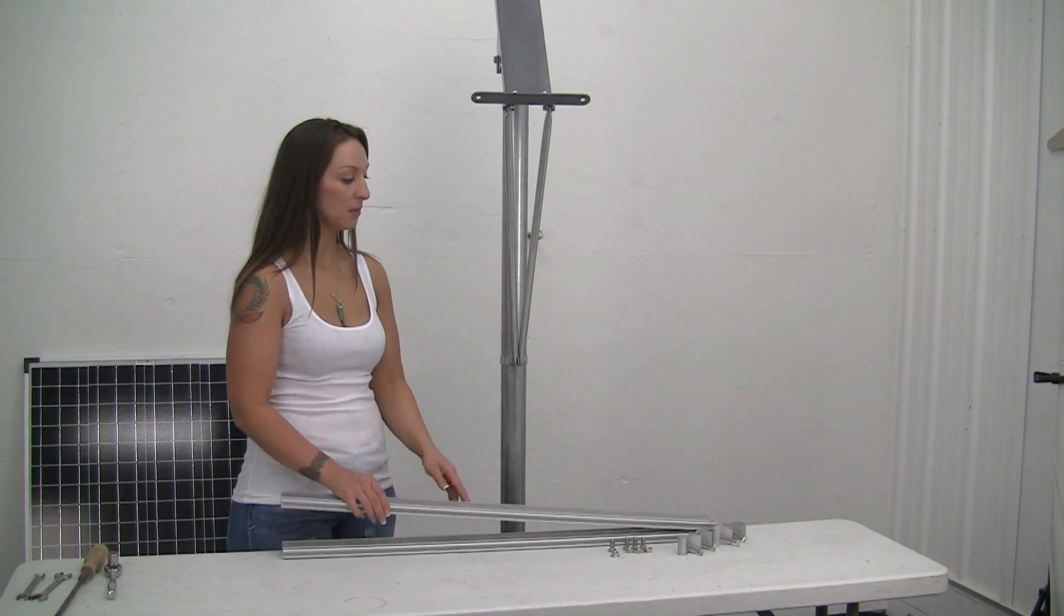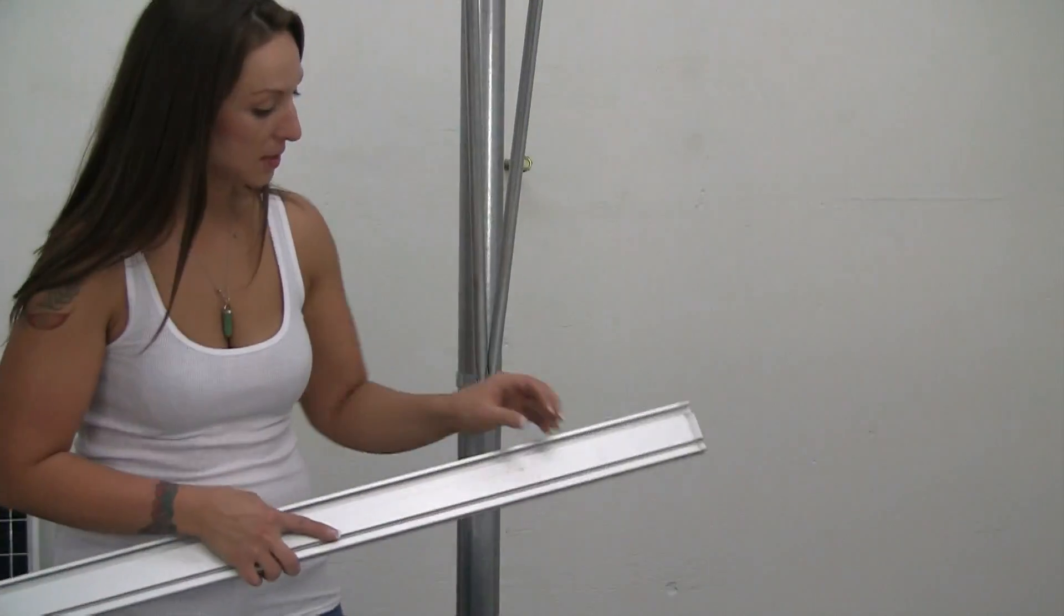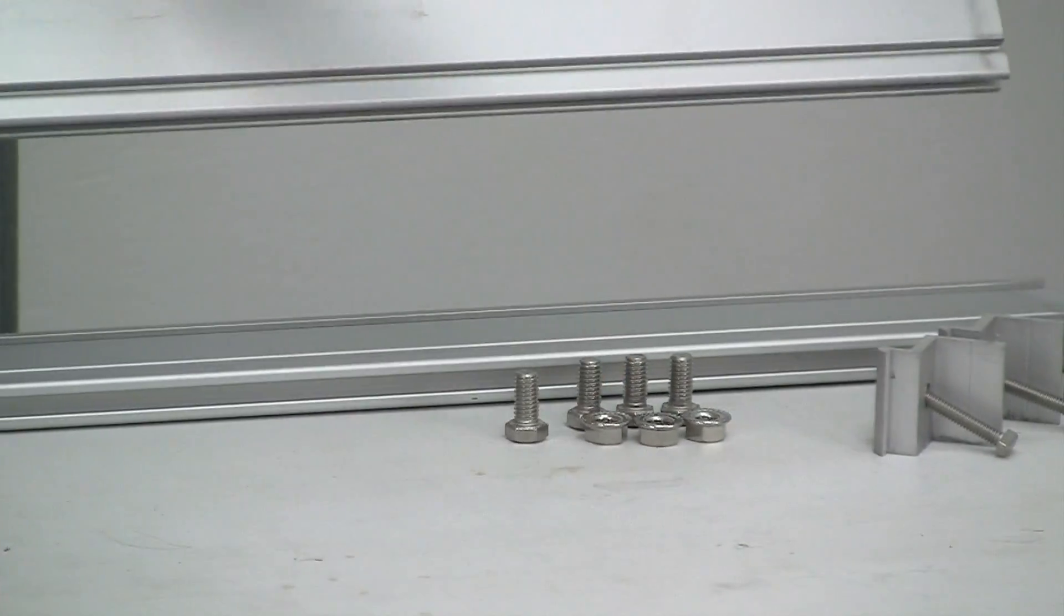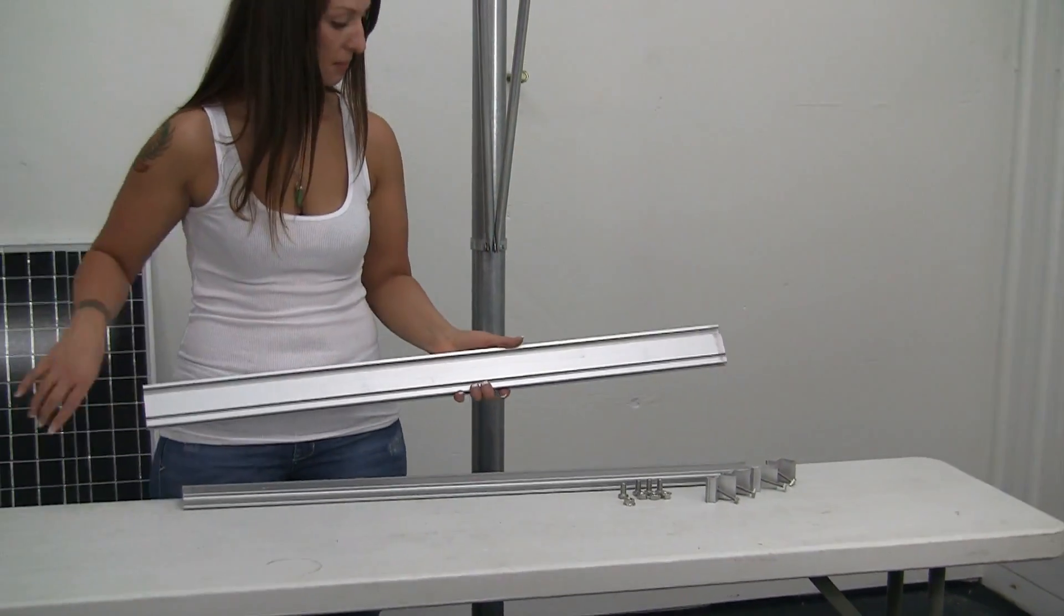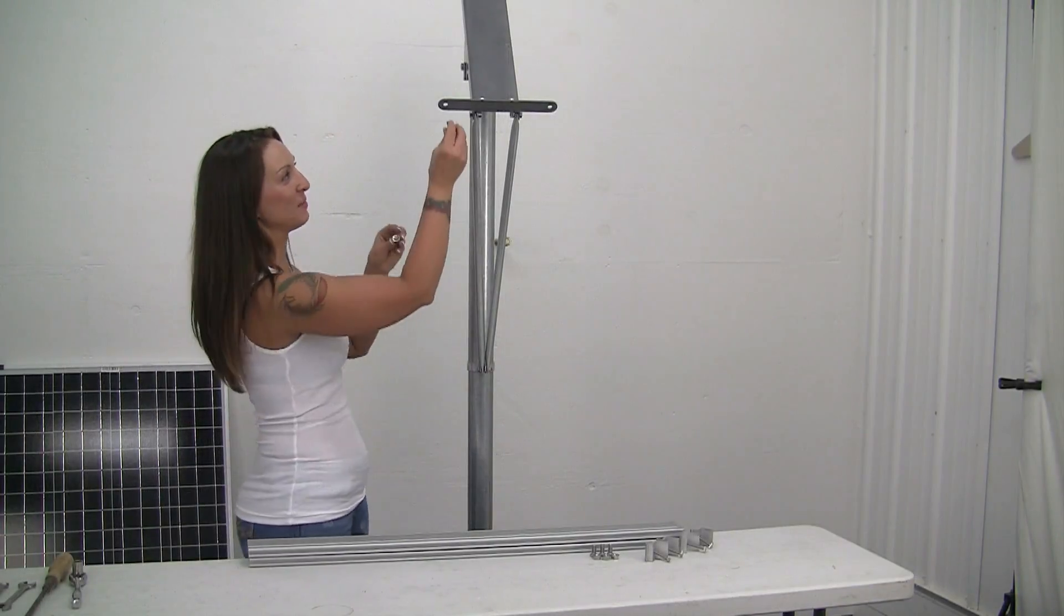Now we're going to install the rails. Okay, these come with stainless steel bolts with serrated nuts. All right, now I'm going to put the bolt on.